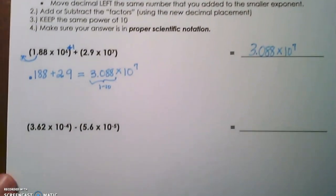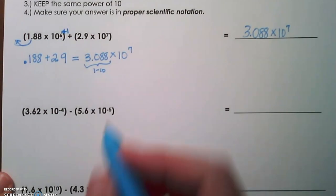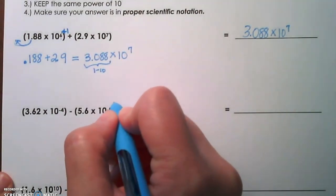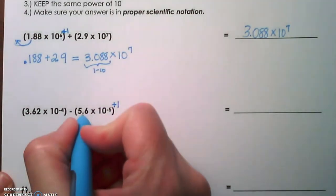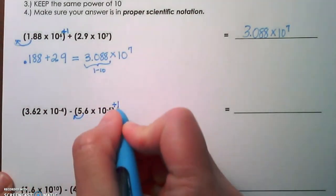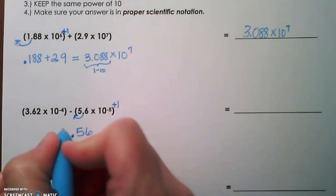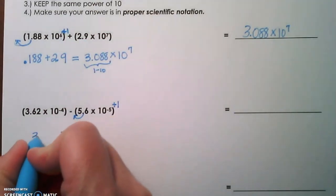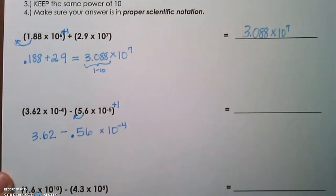In the second example, we're going to add to the smaller exponent. Remember with negative numbers, the more negative is smaller. So we're going to add 1 to negative 5 to make it equal negative 4. Adjust the decimal. Remember, if you add to the exponent, you have to fix the decimal. So this number becomes 0.56. We're going to subtract that from 3.62, and keep the power of 10, which is 10 to the negative fourth power.